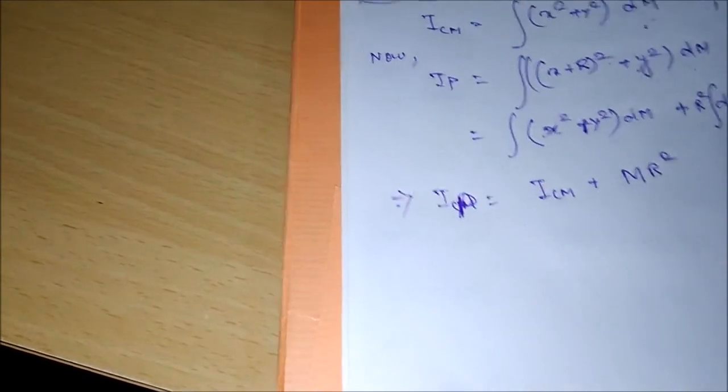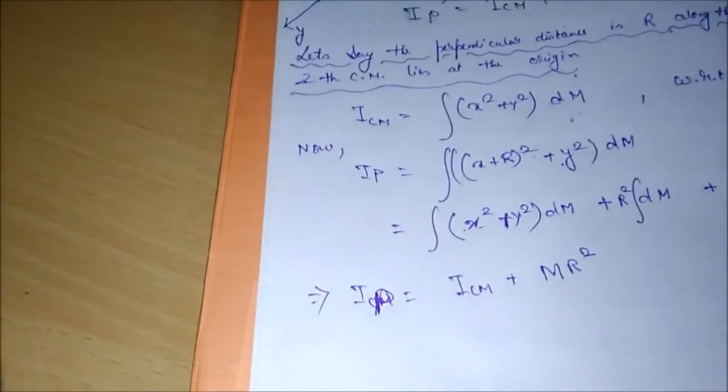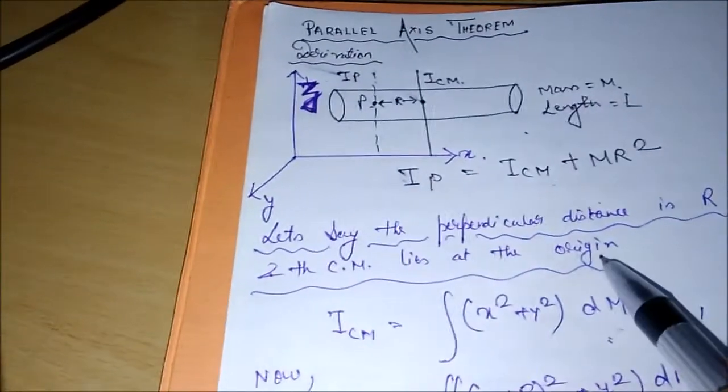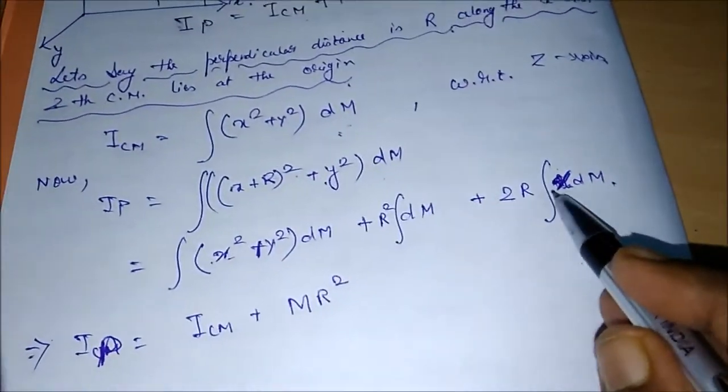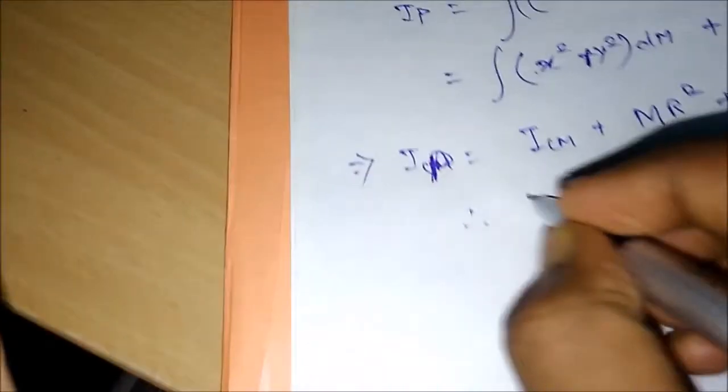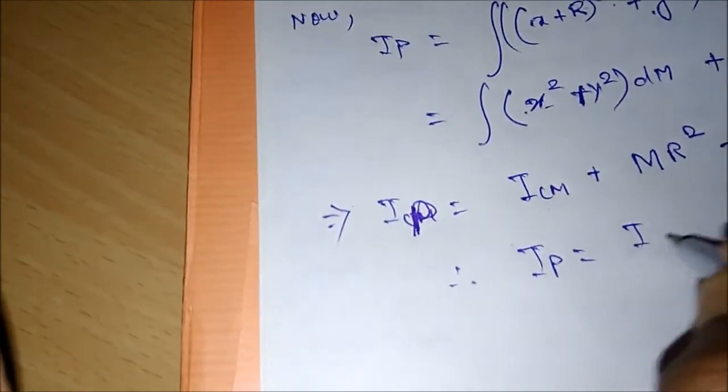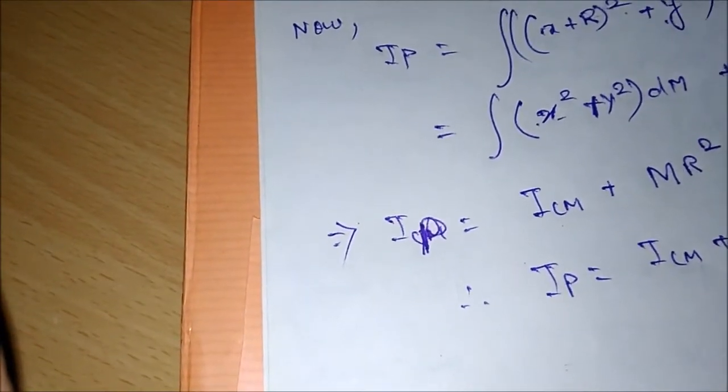Now you must be thinking, then what is this one? Well, this is nothing but the x coordinate of the center of mass. The x coordinate of center of mass is zero. We have just said the center of mass lies at the origin, so the x coordinate of center of mass will be zero. So this is nothing but zero. So we can say therefore Ip is equal to Icm + MR².